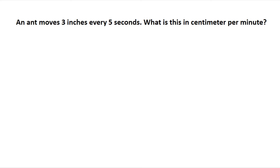Let's have this one: measurement conversion. An ant moves three inches every five seconds. What is this in centimeters per minute? So the given is three inches over five seconds.